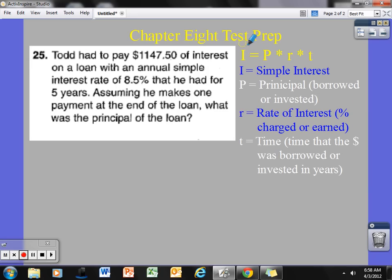So it says here, and here's my simple interest formula. I, which stands for simple interest, equals P, which is the principal, the amount of money you borrowed or invested, times the rate, which is the rate of interest. That's a percent charged or earned on the money that you are borrowing or invested, times time, and that goes with time that the money was borrowed or invested in years.